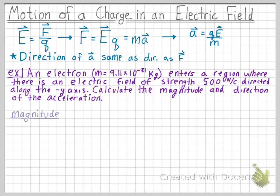First we're going to calculate the magnitude of the acceleration. We know our equation for acceleration is the charge multiplied by the electric field divided by the charge's mass. So we can fill in the charge and mass of the electron, and we know that the electric field has a strength of 500 Newton per coulomb.